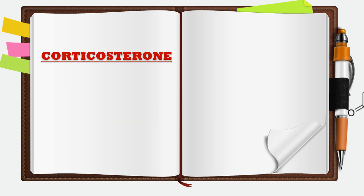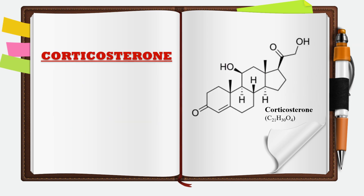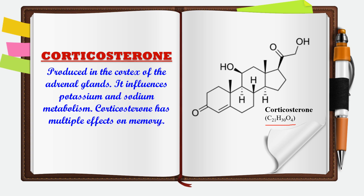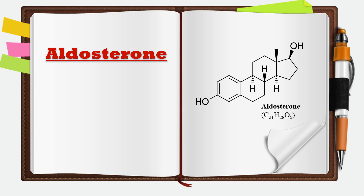The next steroid hormone is corticosterone. It is also a 21 carbon atom hormone with molecular formula C21H30O4. It is also secreted by the cortex of the adrenal gland. This hormone influences potassium and sodium metabolism, and it also has an effect on short-term and long-term memory under stress.